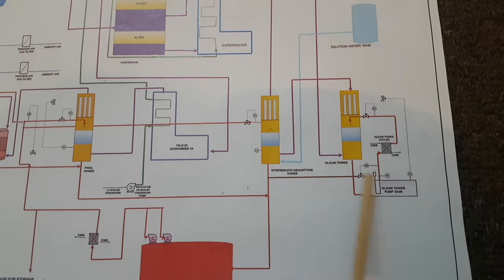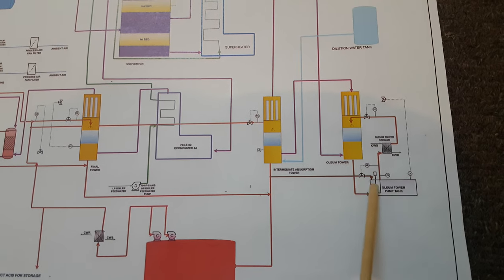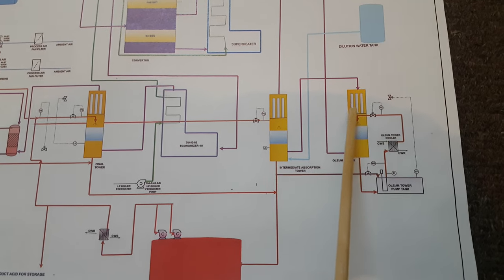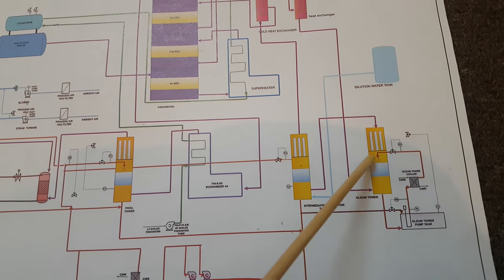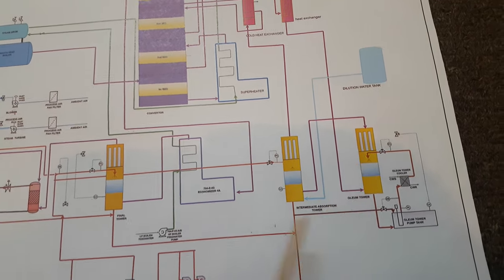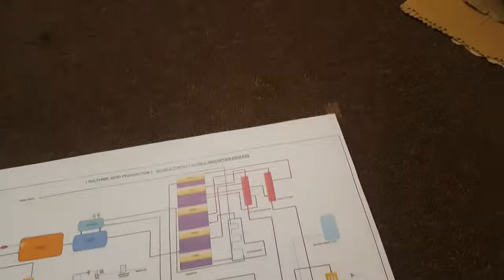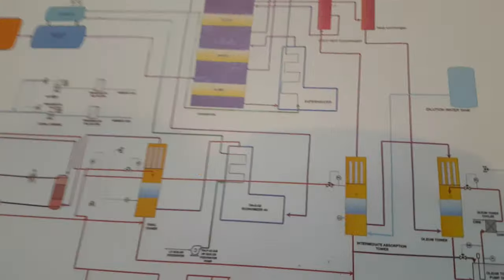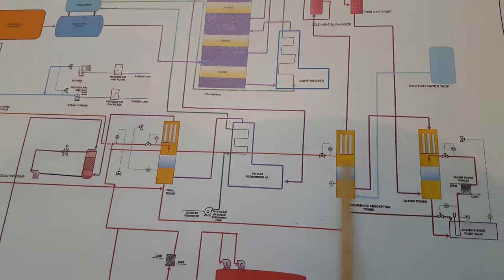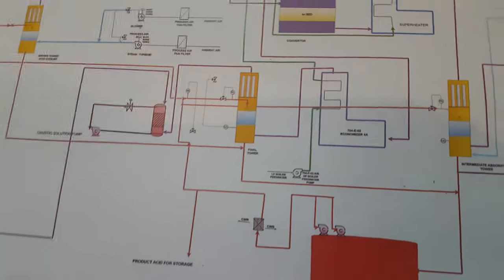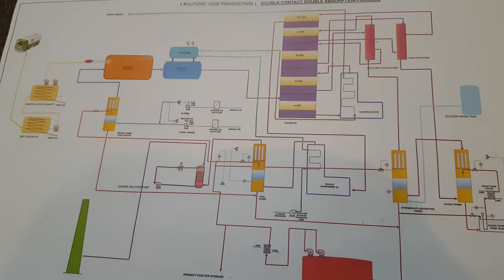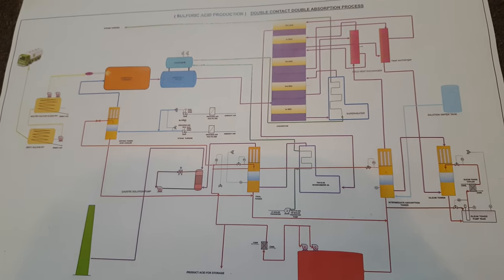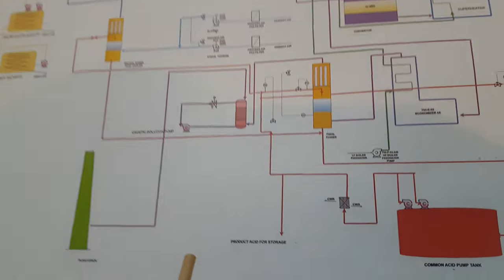Now let's go to the oleum section. This is the oleum pump tank. From here oleum is drained and with the help of a pump we supply oleum to the packing. Whatever oleum is there, it absorbs the sulfur trioxide. If the concentration of sulfuric acid is reduced, we can send this oleum to the absorption column or to the oleum pump tank.